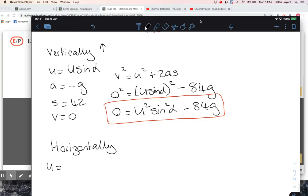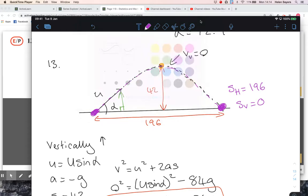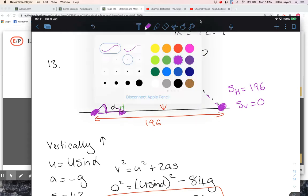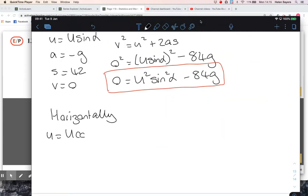Horizontally, the initial velocity is the component adjacent to alpha, so that is u cos alpha. There is no acceleration, so I don't need to use SUVAT, it's constant velocity horizontally. I know that its horizontal displacement when it hits the ground is 196, and let's call time capital T. So displacement is velocity times time: 196 equals u cos alpha times T.